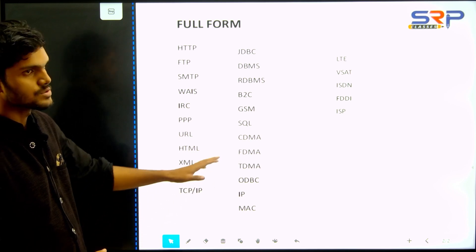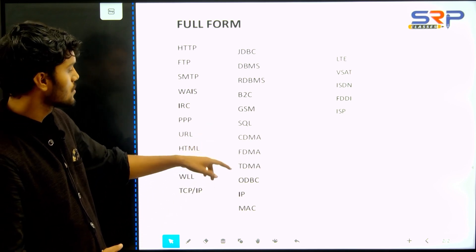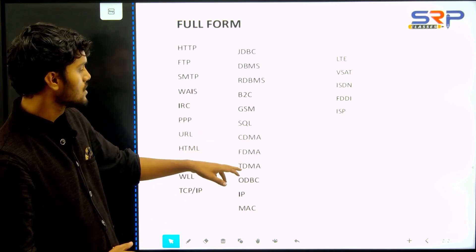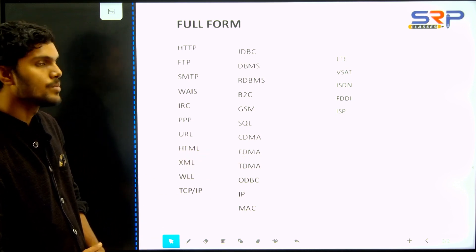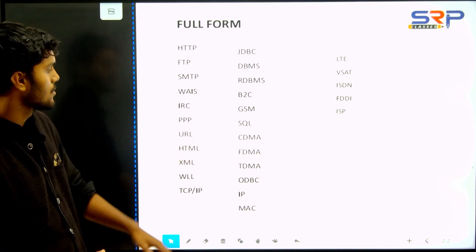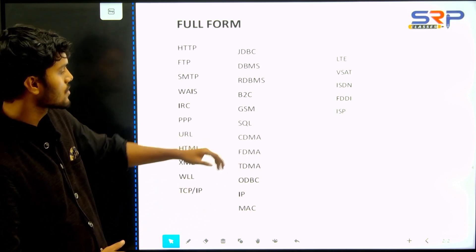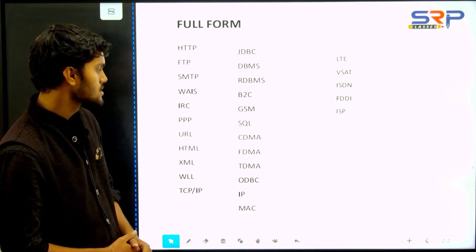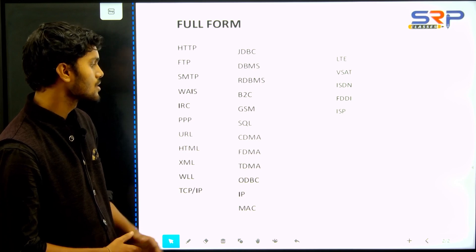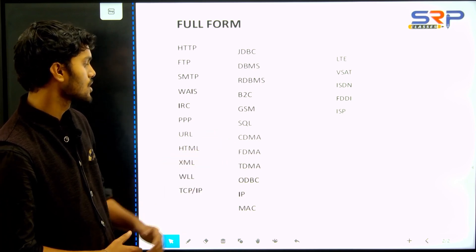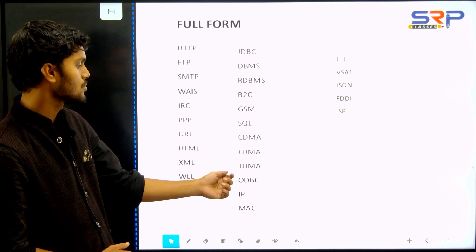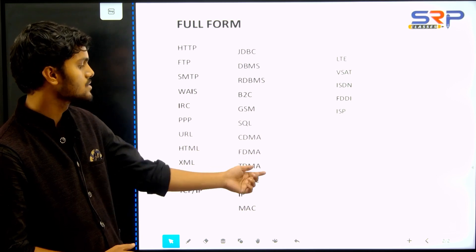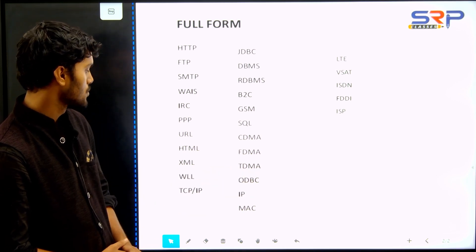Mobile technology — the second one is TDMA and FDMA. But 3G technology is CDMA — Code Division Multiple Access. FDMA is Frequency Division Multiple Access. TDMA is Time Division Multiple Access.